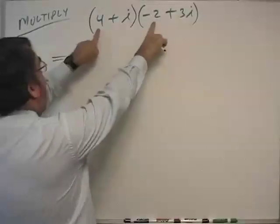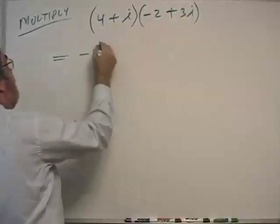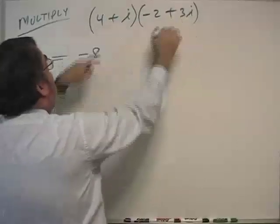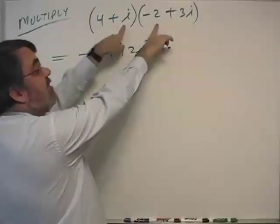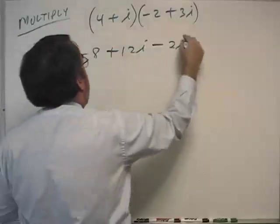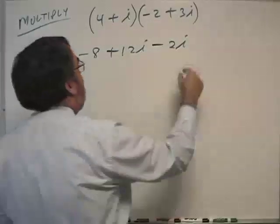And so I get 4 times negative 2 is negative 8, and then 4 times 3i is plus 12i, i times negative 2 is minus 2i, and then i times 3i is plus 3i squared.